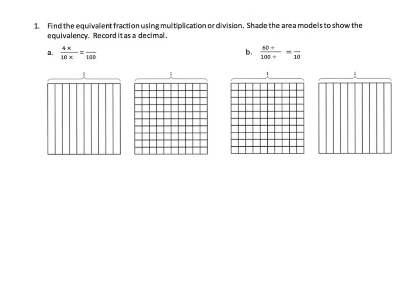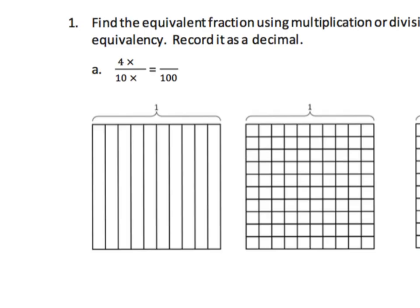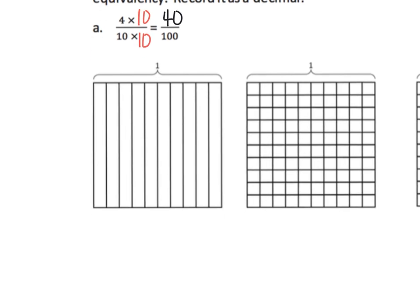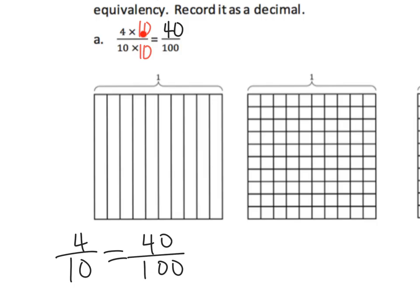Now we're going to put it into practice. The task says: find the equivalent fraction using multiplication or division, and shade the area models to show that we are correct. So for four tenths: if we multiply the denominator ten by ten we get one hundred, which means four times ten gives us forty. So four tenths is equal to forty hundredths.